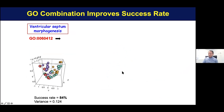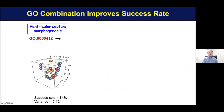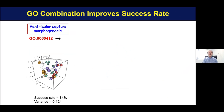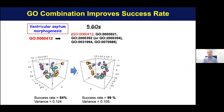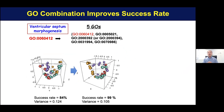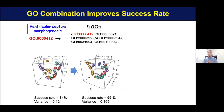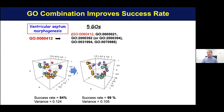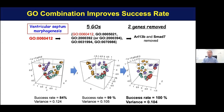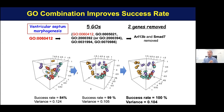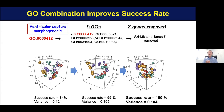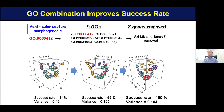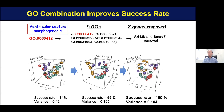My internship student further optimized our method. She generated large combinations of gene sets, and after five combinations she found a 99% success rate. She then optimized more by removing genes one by one, and when she removed two genes, the success rate finally attained 100%.